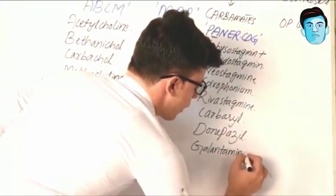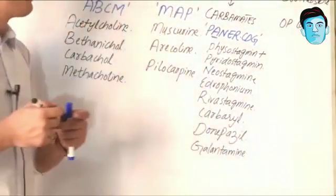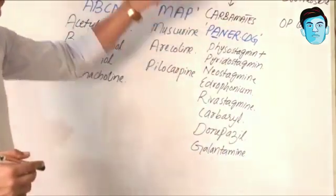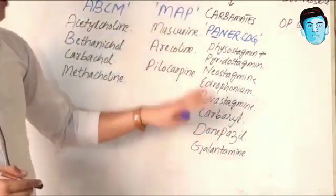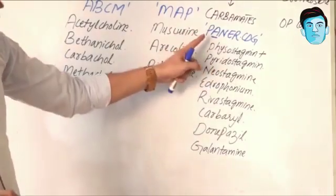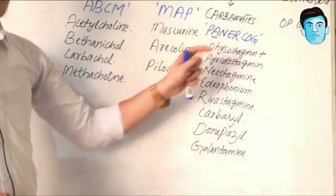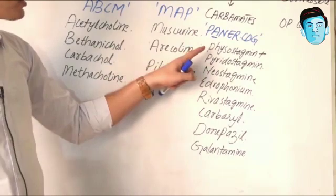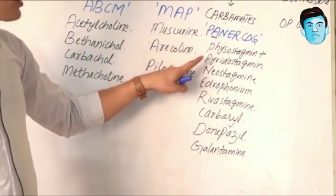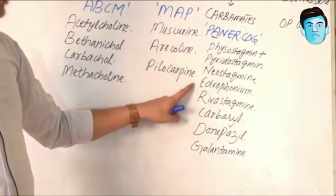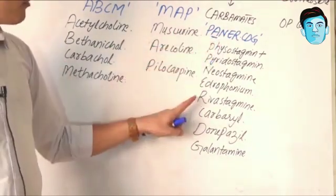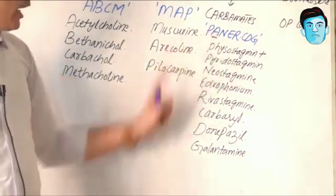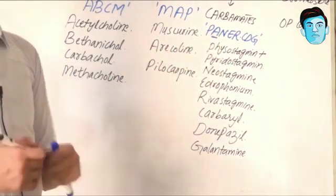So the reversible anticholinesterases contain a lot of drugs, for which we have the mnemonic PANEER CDG: P stands for Physostigmine plus Pyridostigmine, N stands for Neostigmine, E stands for Edrophonium, R stands for Rivastigmine, C for Carbaryl, D for Donepezil, and G stands for Galantamine.